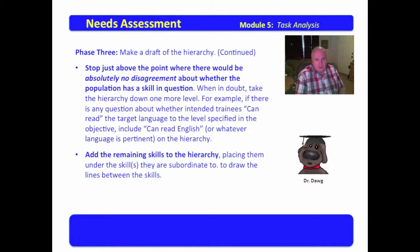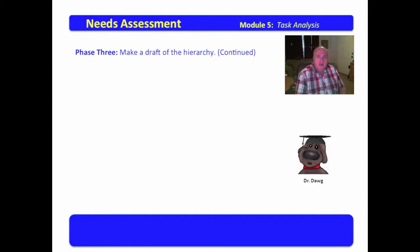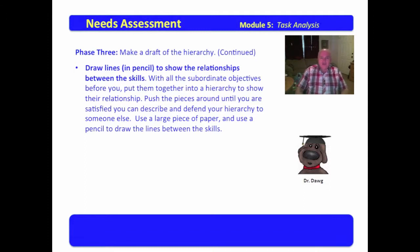Add the remaining skills to the hierarchy. Placing them under the skills that they are subordinate to, to draw the links and draw the lines between the skills. Now, draw lines to show the relationship between the skills. Once you've got them all listed up, what is a relationship? When all the subordinate objectives before, you put them together into a hierarchy to show their relationship. Push the pieces around until you're satisfied you can describe and defend your hierarchy to someone else.